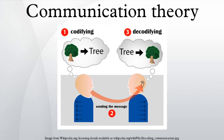Shannon focused on the problem of how best to encode the information that a sender wants to transmit. He also used tools in probability theory developed by Norbert Wiener. They marked the nation stages of applied communication theory at that time. Shannon developed information entropy as a measure for the uncertainty in a message, while essentially inventing the field of information theory.